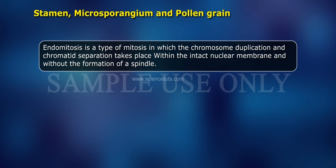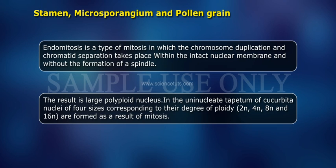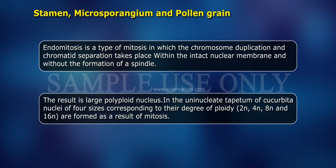Endomitosis is a type of mitosis in which chromosome duplication and chromatid separation takes place within the intact nuclear membrane and without the formation of a spindle. The result is a large polyploid nucleus. In the uninucleate tapetum of Cucurbita, nuclei of four sizes corresponding to their degree of ploidy — 2N, 4N, 8N and 16N — are formed as a result of mitosis.